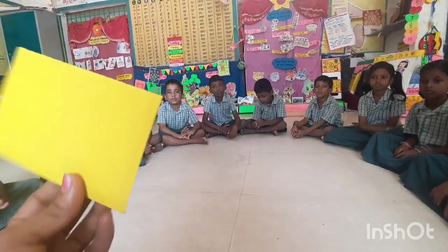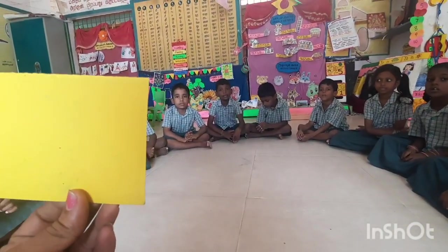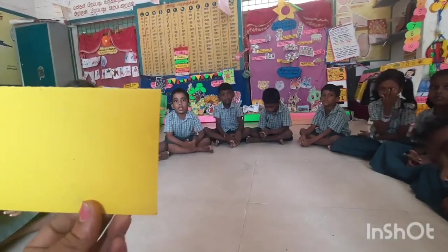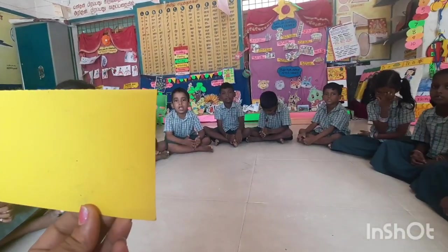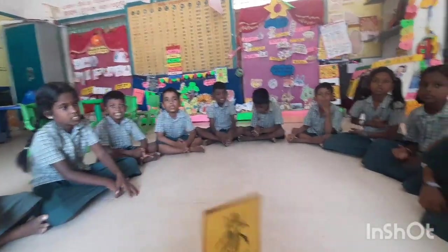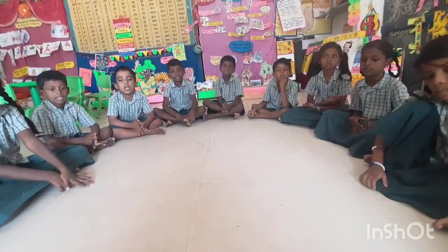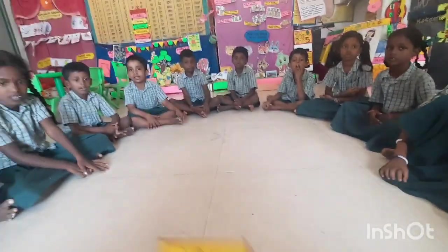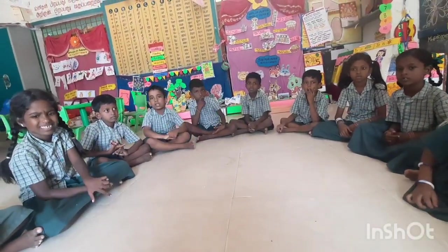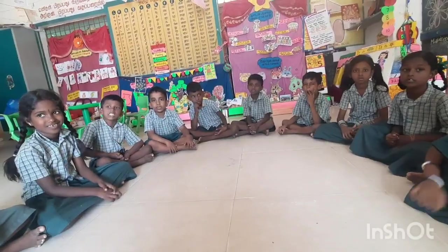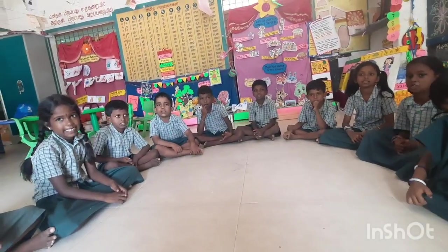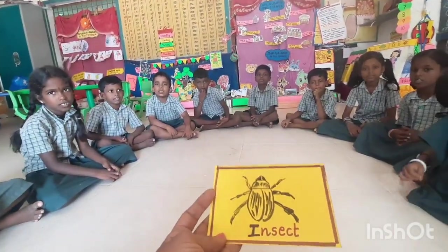Name this picture. The sound is E. Insect. E. Insect. Sound is E. How you should read this? We are going to read this with initial sound. E. Insect. E. Insect.